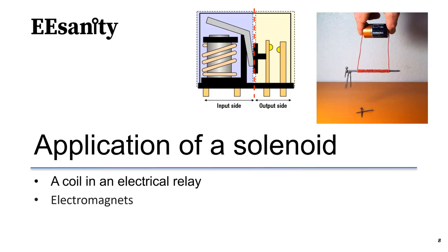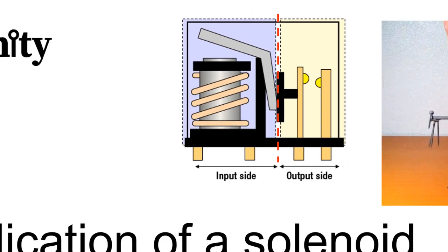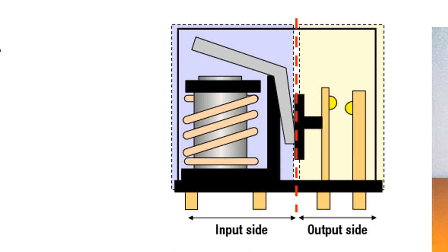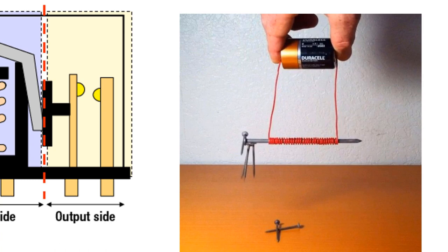Electrical relays and electromagnets are real-world applications of a solenoid. A mechanical relay has a physical spacing between the coil and the contact component in order to achieve a proper level of insulation at output and input. An electromagnet is different from a permanent magnet — it is a type of magnet in which the magnetic field is produced by an electric current. Electromagnets are made of coils of wire when electricity is passing through.